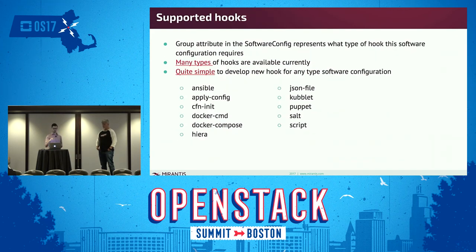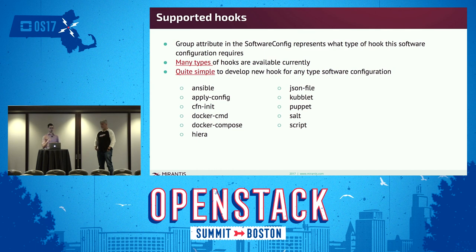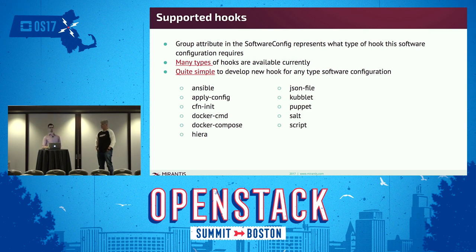For example with actions: on create when you first create the stack, or delete — if you have a clustered application with slaves, you can have a create script for joining the cluster and a delete script for deregistering. The group attribute in software config indicates what type of hook — or interpreter — the agents will use to run the script. These can be things like Ansible, Puppet, Salt, or in our case, script which is just bash. The point is: if you start using Heat as a configuration management tool, you don't have to learn a brand new language — you can use your existing scripts while also managing infrastructure with Heat.